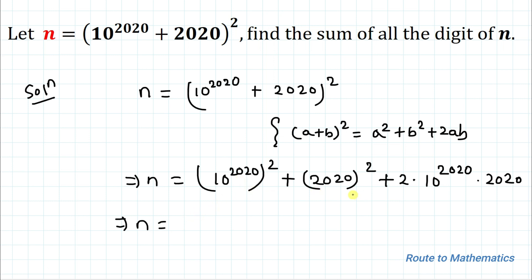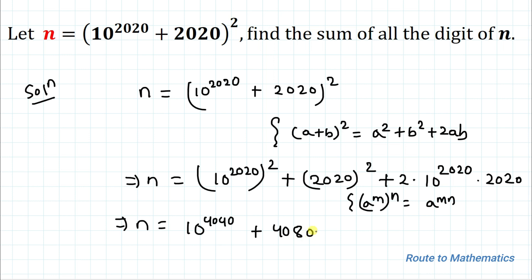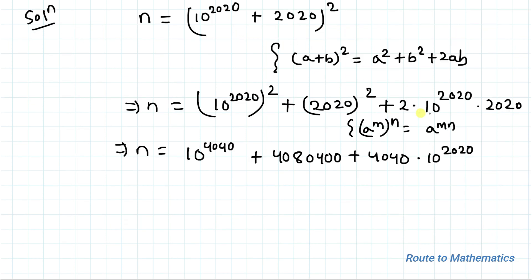So we have 10^4040 plus 2020² which equals 4,080,400, plus 2 × 2020 × 10^2020, which gives us 4040 × 10^2020.